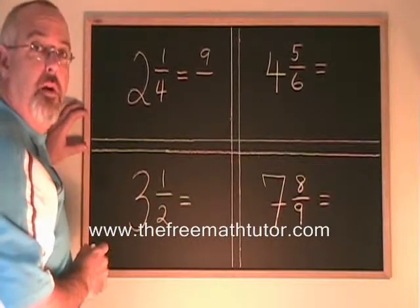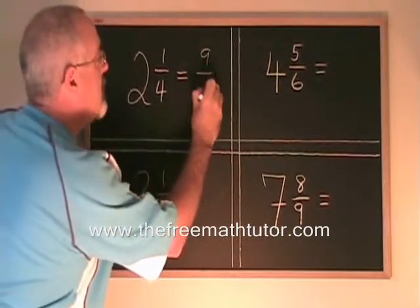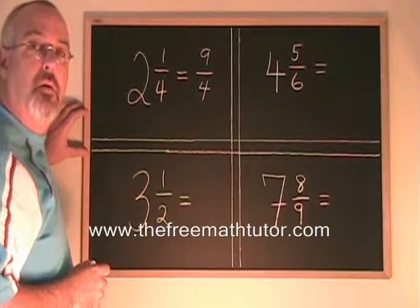The new denominator is the same. It's a four. Two and a quarter is equal to nine quarters.